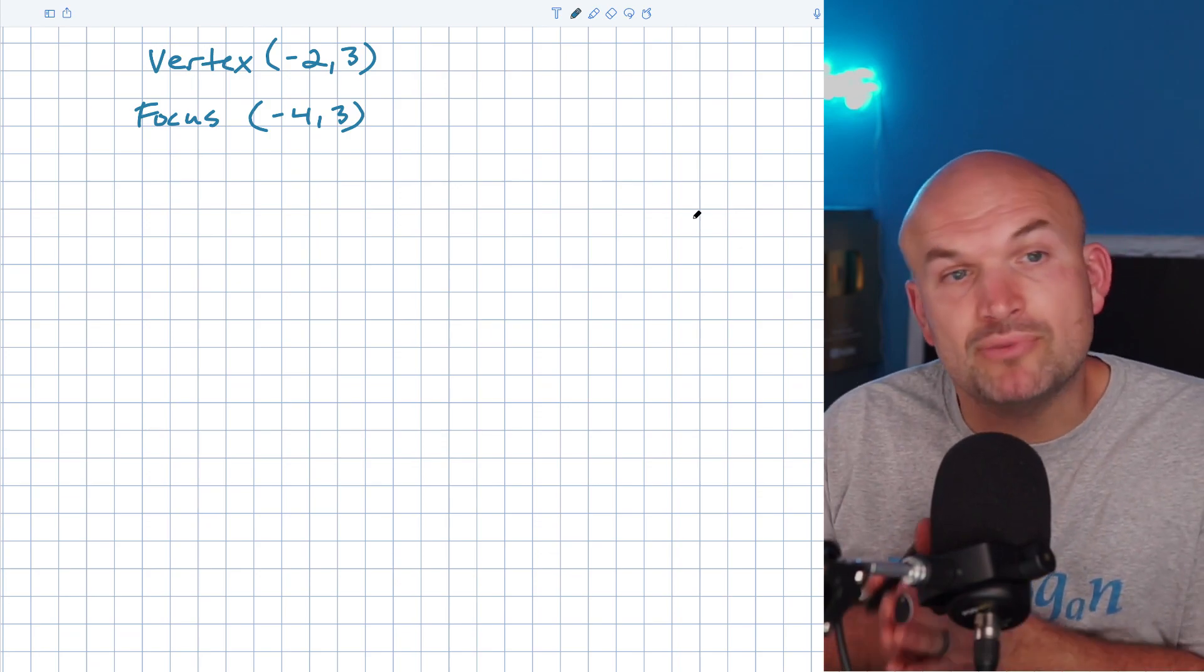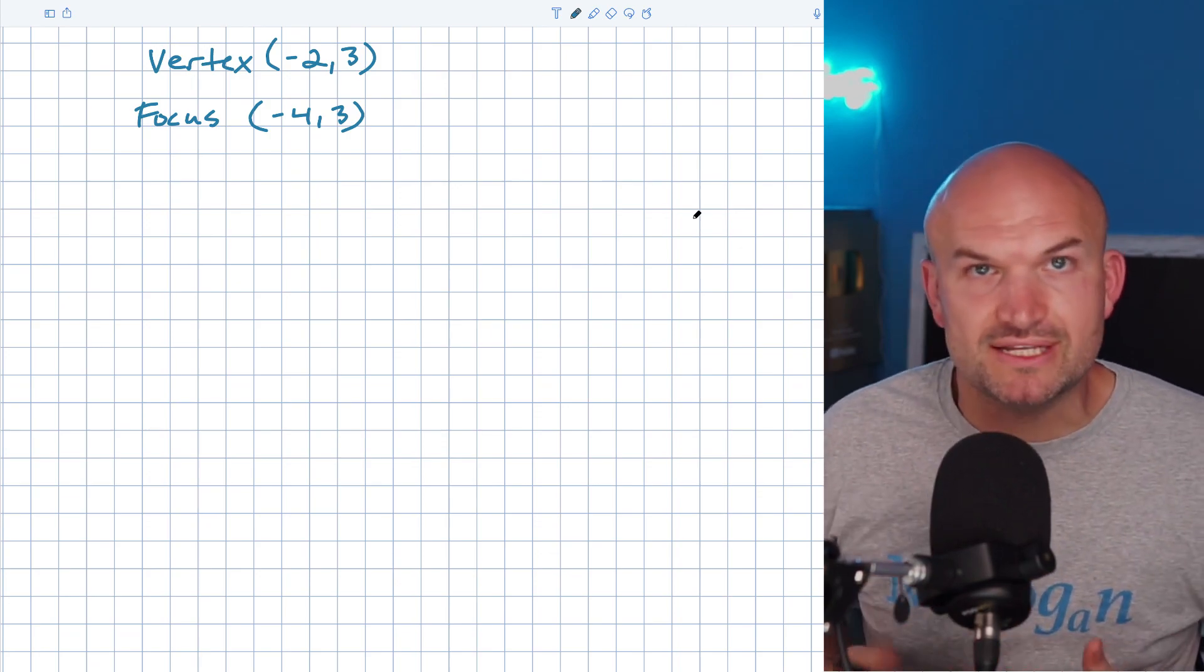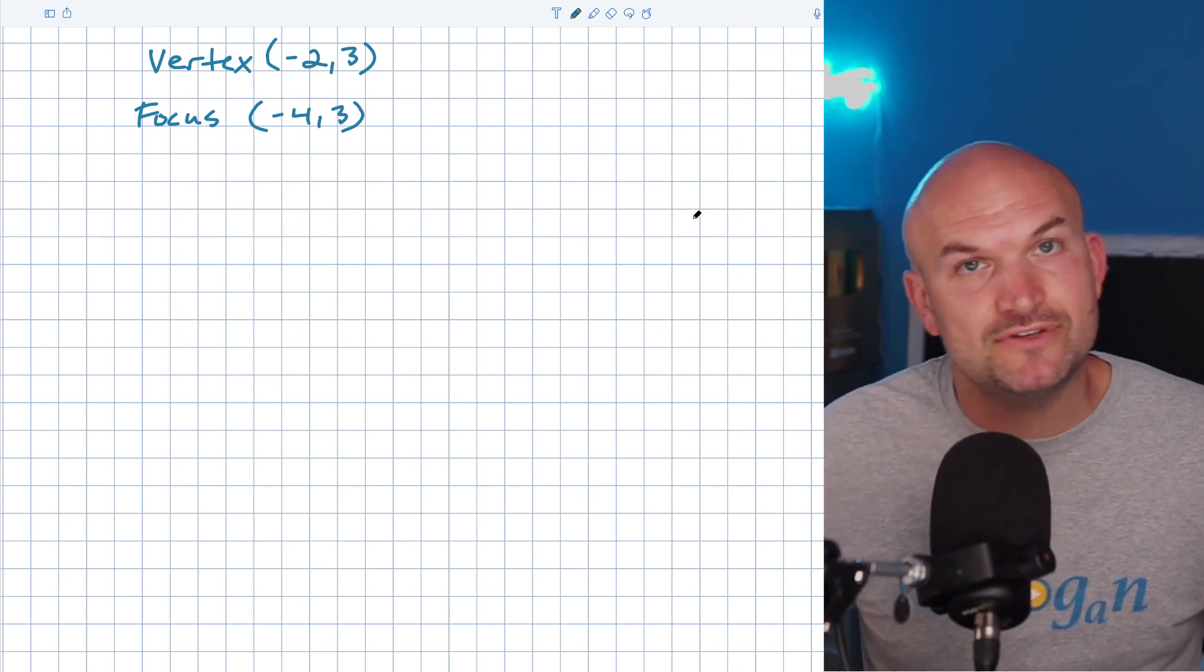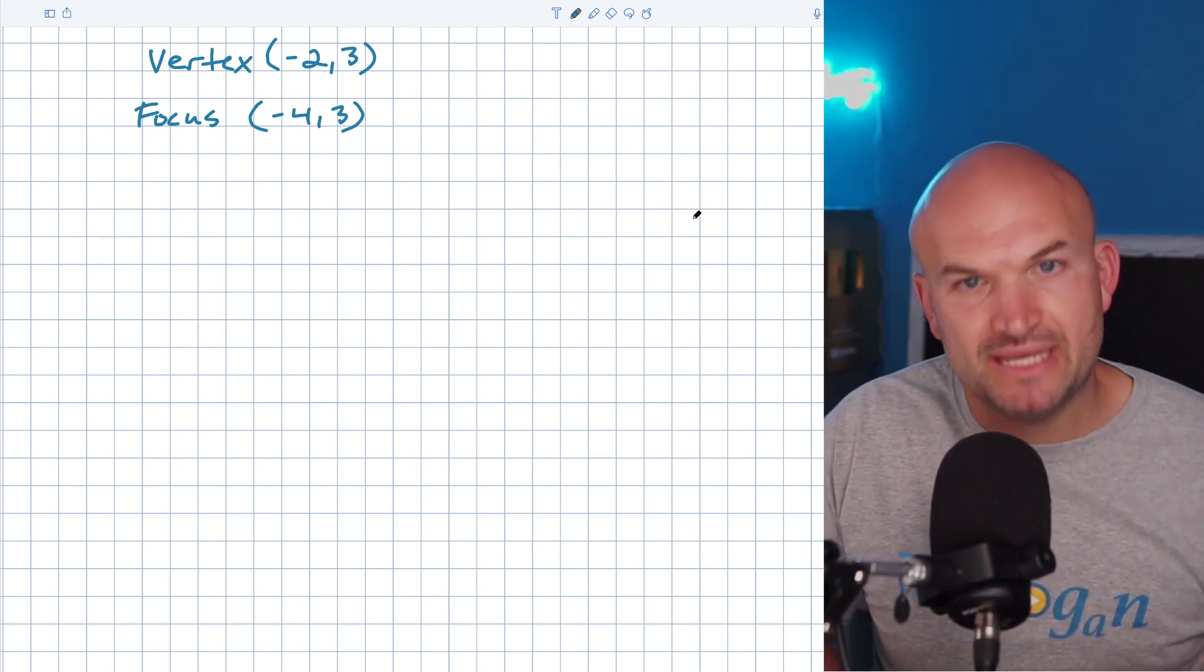All you need to know when you're trying to graph a parabola, when you're given the vertex and the focus, is to understand the orientation of your parabola. Does it open up, down, left or right, as well as the value of P?